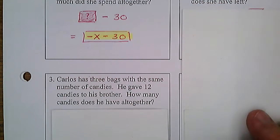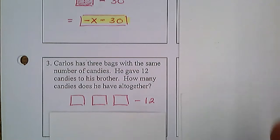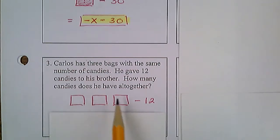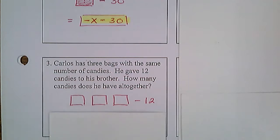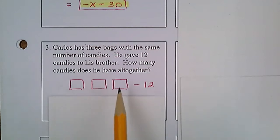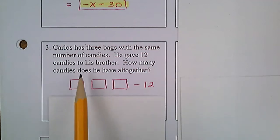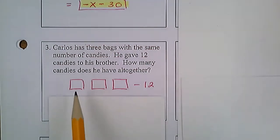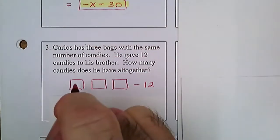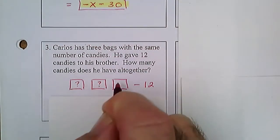Since we don't know, we're going to draw a tile. He has three bags, there's candy in there, so it's going to be positive — we don't shade it in because it's not negative. There's candy in all three. All we know is that he gave 12 pieces to his brother, so he might have taken them from any of the bags. There are three bags of candy that each have the same amount — that's why we made them the same size — and then minus 12.